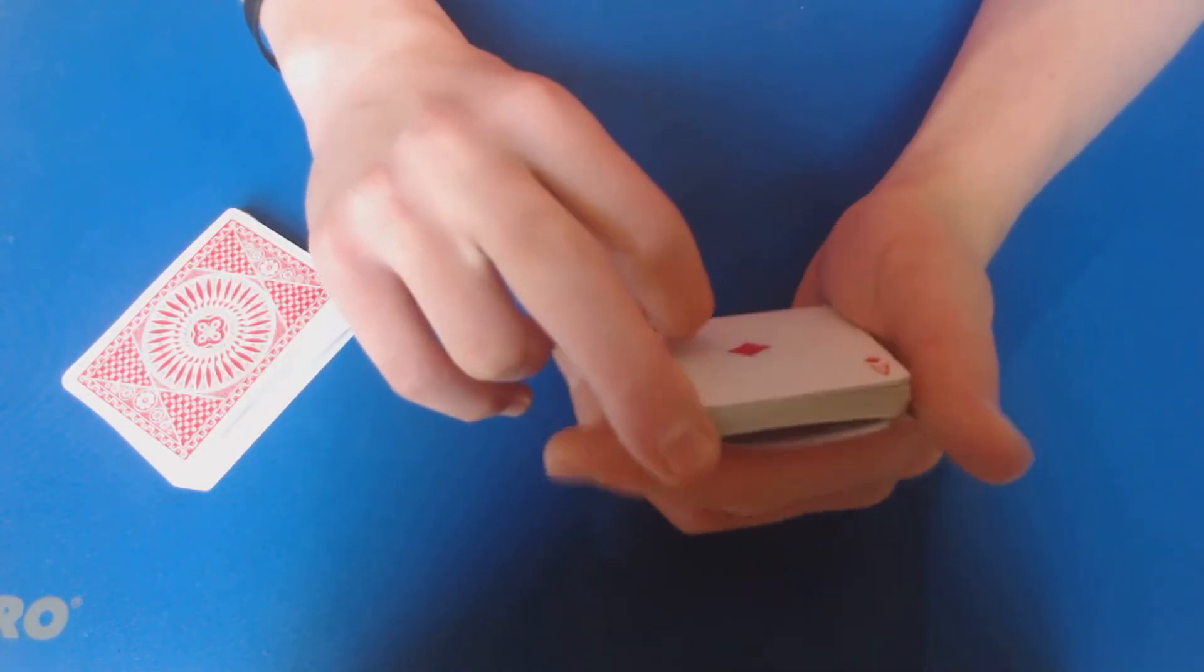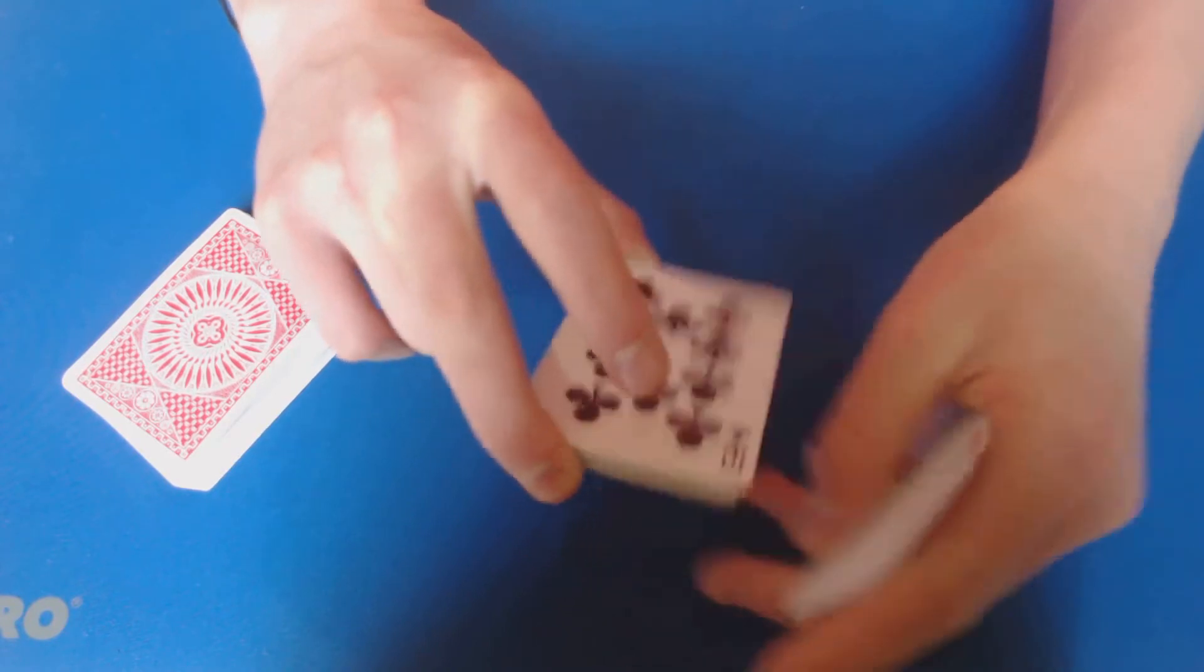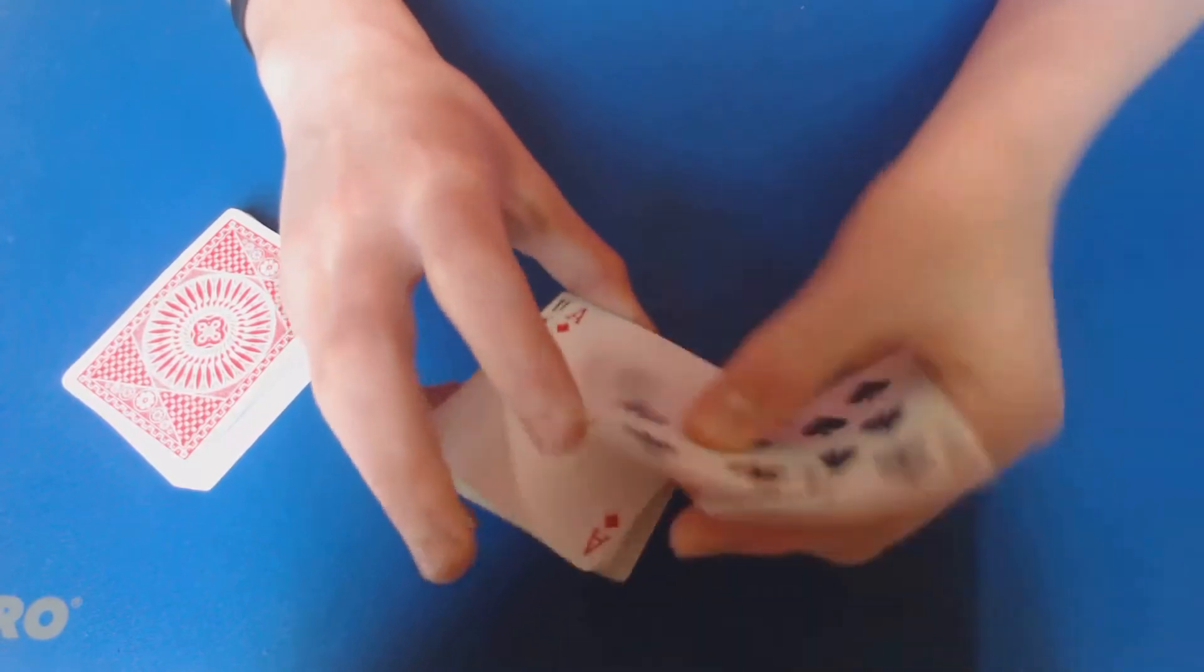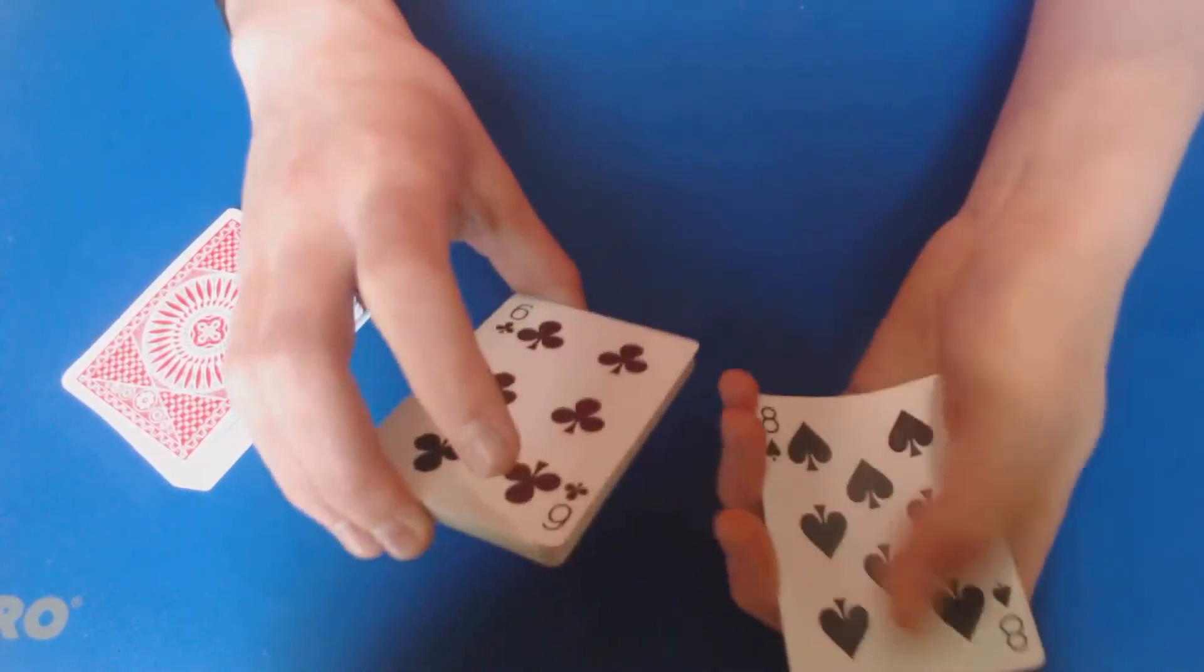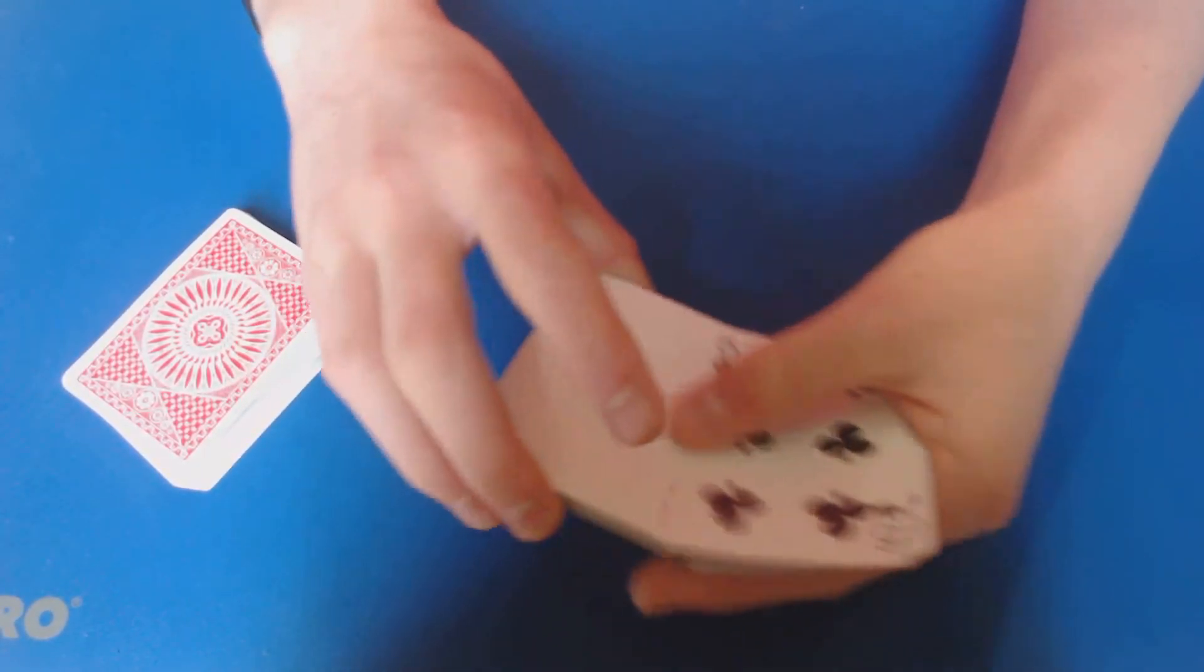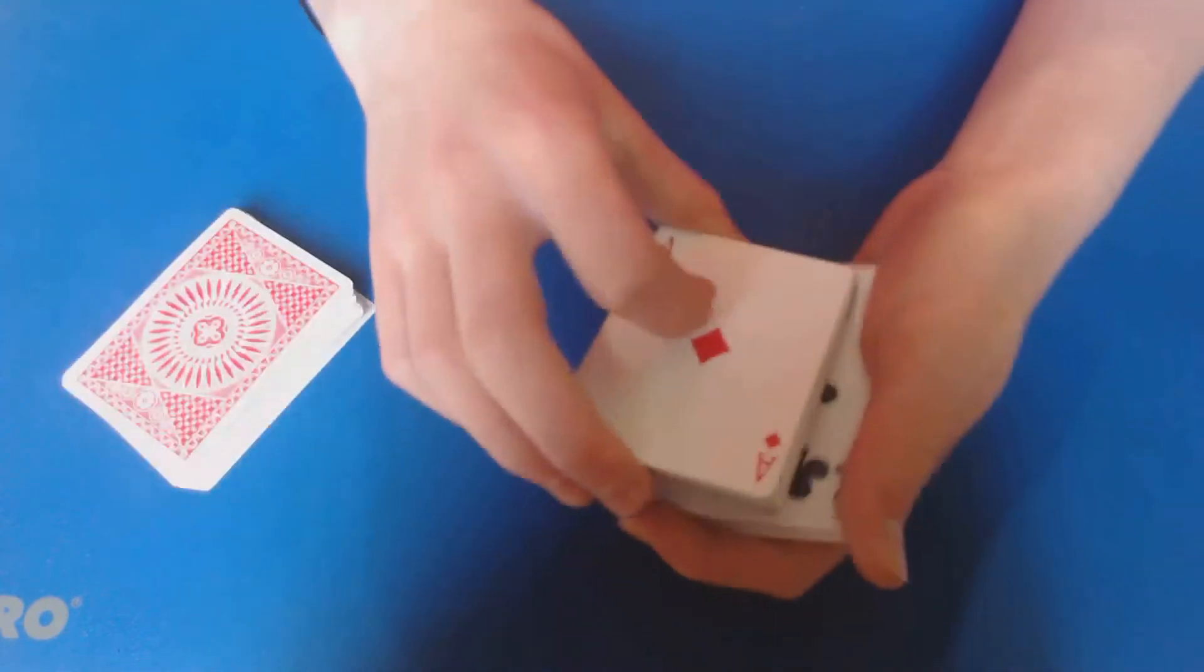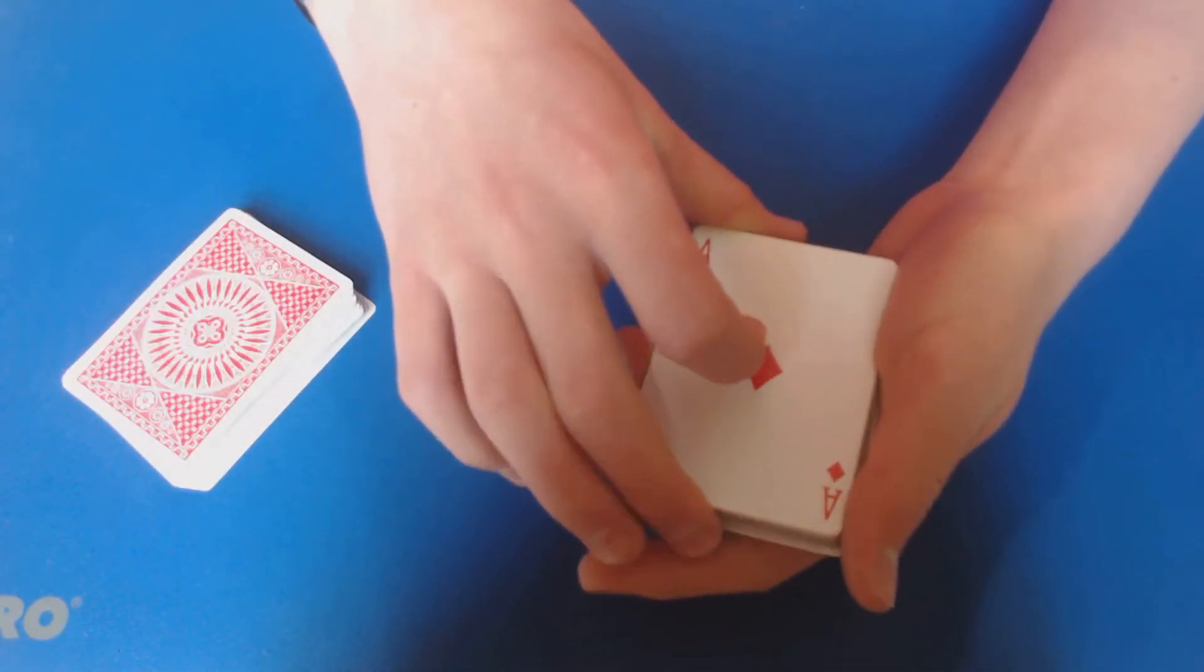This is where you're going to drop the six on the bottom of this packet while you pull off the eight. Okay, so let me do that again. You have the eight, pull it off, put your pinky on top of it. You have the six, now you have the pinky break in between those two, right?